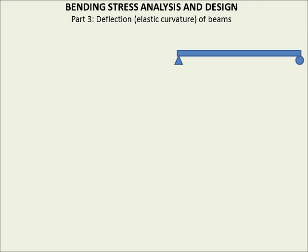In our previous lectures we talked about what bending is, the stresses it produces, and we came up with the section modulus which is a cross-sectional property. We also covered the moment of inertia and talked about how all that relates to the stress distribution in a particular cross-section. But now we're going to talk about the beam itself — how it changes shape, how it deforms, and actual measurements and predictions we can make about these measurements.